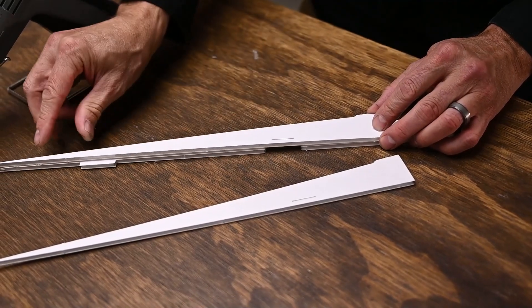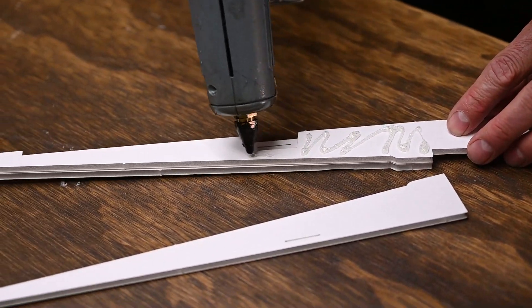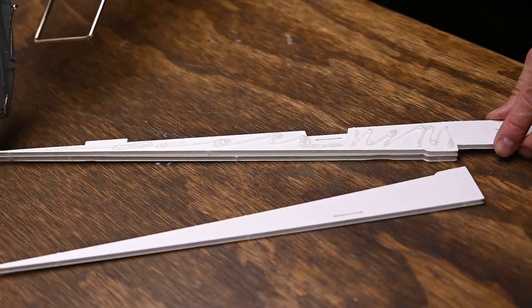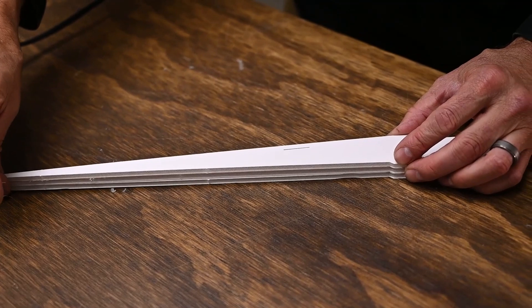Once that cools down, we'll flip it over and do the same on the other side. Also, avoid putting glue on the tab sticking up near the rear. And just like we did on the front half, we're going to trim the back to neaten it up just a little bit.